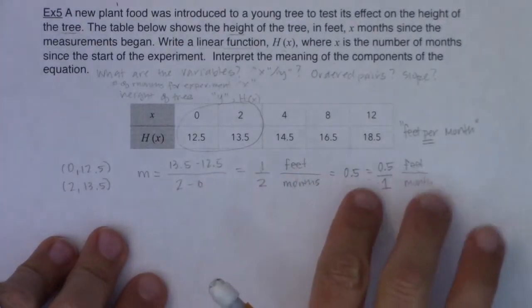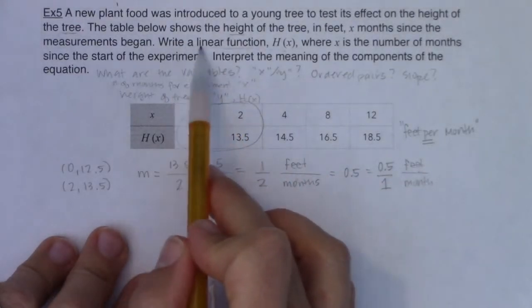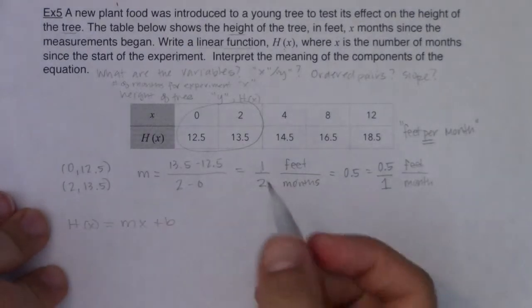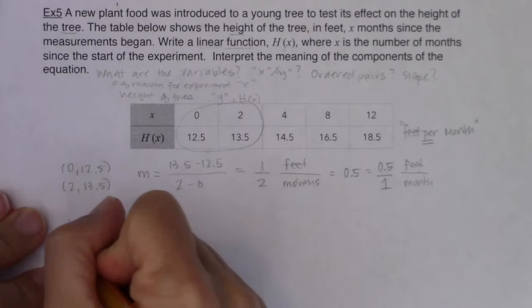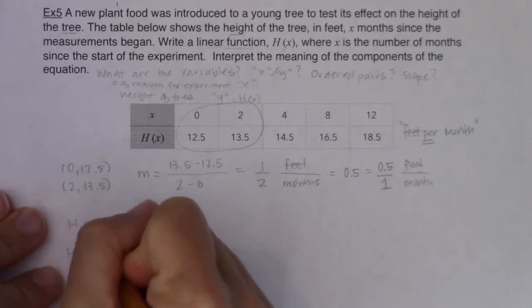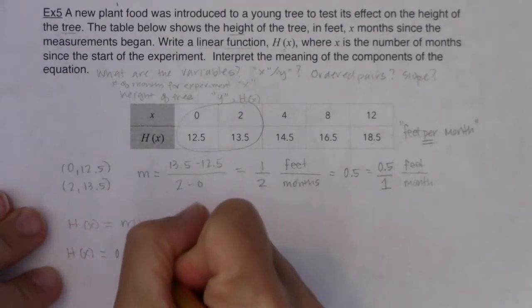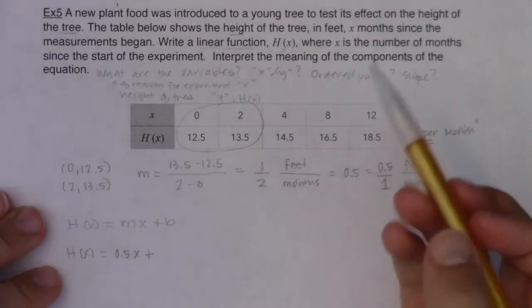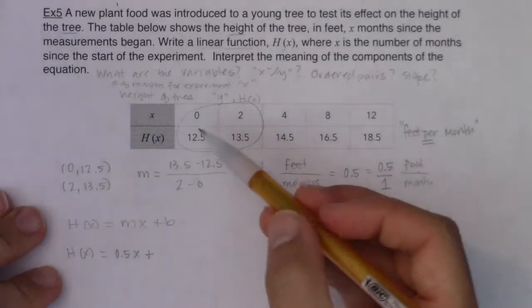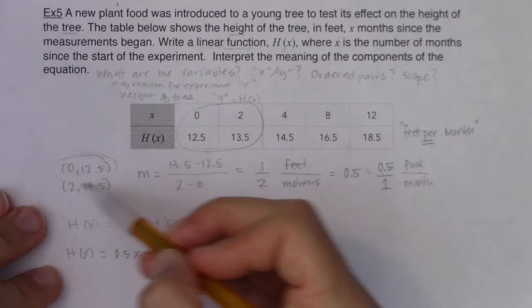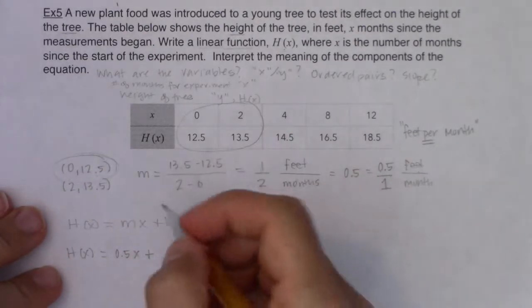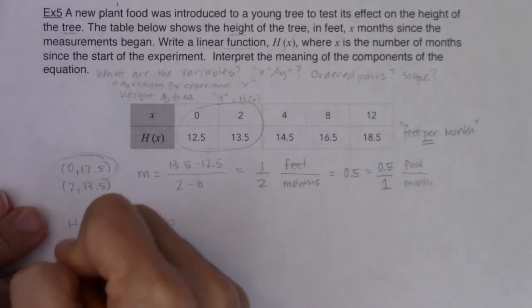Okay, so this is all fine and good. I have the slope, but again, my first direction here was write a linear function. Well, for H of X, I'm going to need MX plus B. Well, I already, I know M, I just found it, it's 0.5. So I know H of X is 0.5X plus, all right, what was my Y intercept? Well, you could use point slope form, you could, you could do all sorts of things to find B, but also you already have it. This ordered pair here is the Y intercept because when X was 0, the height of the tree was 12.5. So here is my linear function.